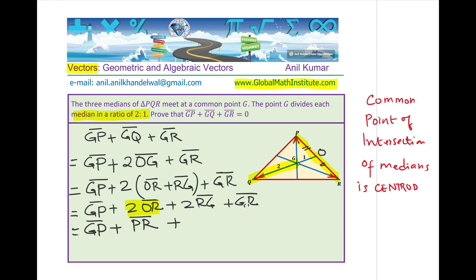Now, 2RG and GR. I could write this also in terms of GR negating the sign. Since when the direction of the vector reverses, it becomes a negative vector. So I am replacing this with negative 2 times GR. Does it make sense?